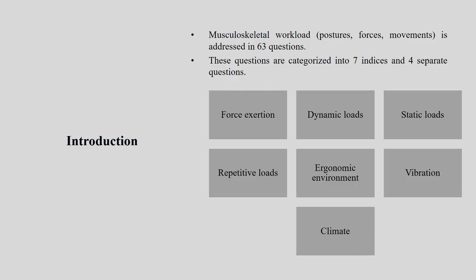When talking about intervention and starting your design process, you can have a very detailed idea of what the impacting factors are and where to start your design intervention. This tool is very helpful in those cases. We have seven indices — force exertion, dynamic load, static load, repetitive load, ergonomics environment, vibration, and climate — with a total of 63 questions. I suggest everyone should download this Dutch Musculoskeletal Questionnaire and go through it.